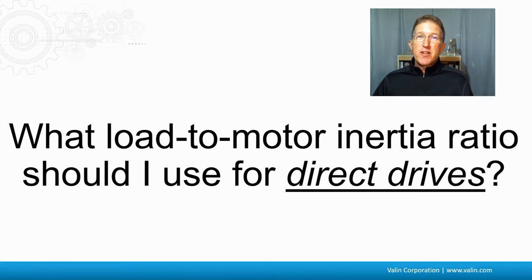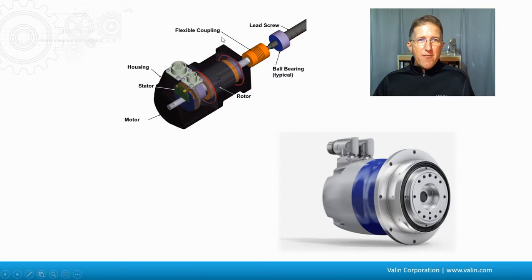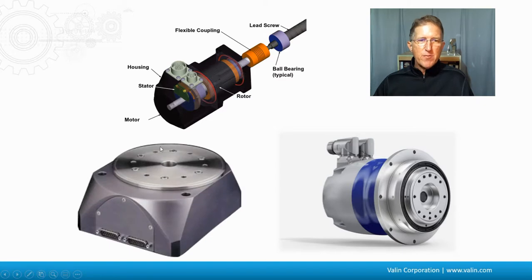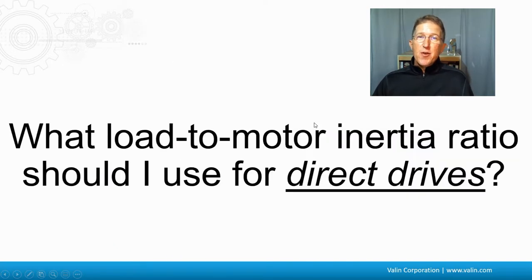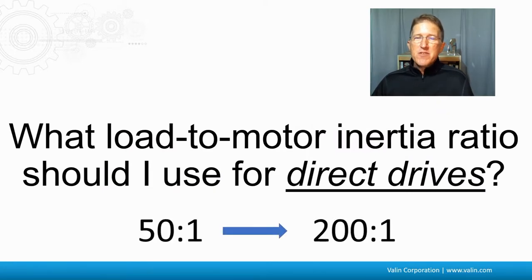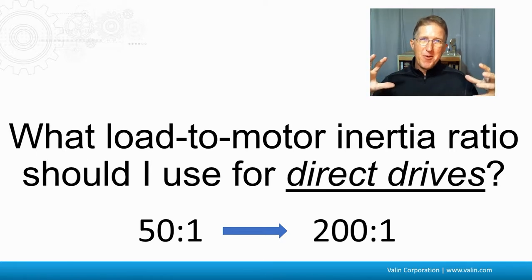For direct drive motors, motors are typically coupled to lead screws, belt pulleys, or other mechanics via flexible couplings that introduce some compliance. But if the motor has a flange front or is a direct drive where you can bolt the load directly to the motor, there's no compliance from a coupler. In that case, inertia ratios of 50 to 1, 100 to 1, or even 200 to 1 are acceptable, because the motor and load are essentially one rigid system with no compliance to tune out.